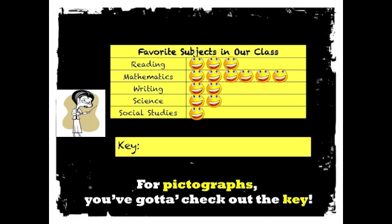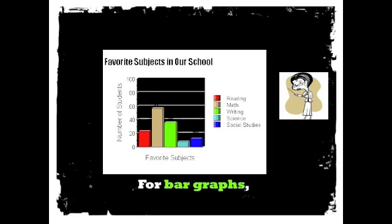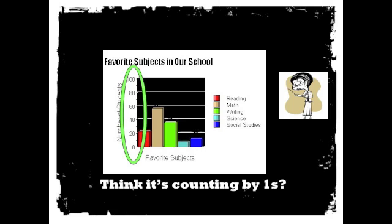For pictographs, you gotta check out the key. One smiley face might really equal three. For bar graphs, pay attention to the scale. Think it's counting by ones, you'll fail.